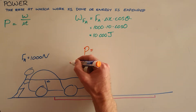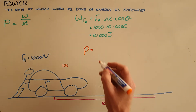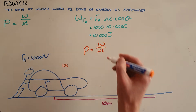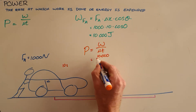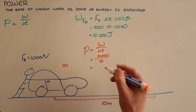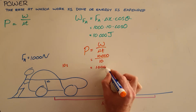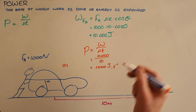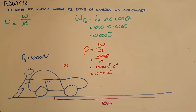If this takes 10 seconds — so it takes this person 10 seconds to push the car 10 meters — then this person's power output is the work over the time it took. The work done was 10,000 joules and the time was 10 seconds, which means the average power output was 1000 joules per second, or 1000 watts.